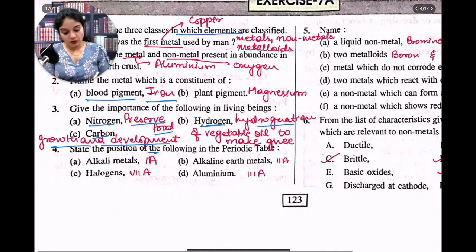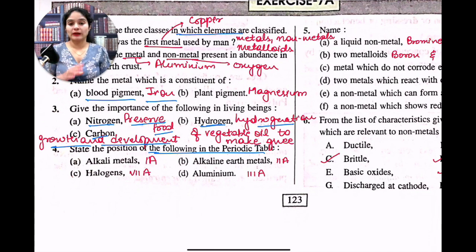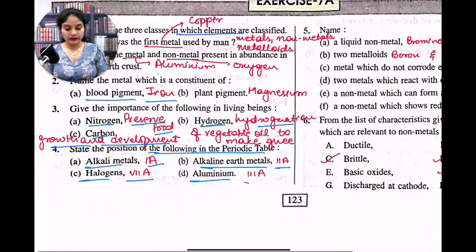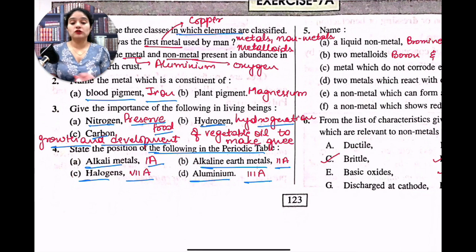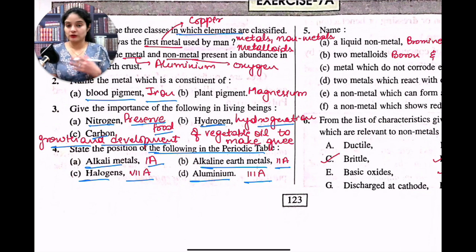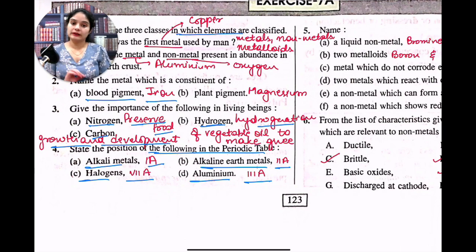State the positions of the following in the periodic table. So you need to know the group numbers. Alkali metals are in group 1A. Alkaline earth metals are in group 2A. Halogens are in group 7A. Aluminium is in group 3A. These details I have already explained with the help of a periodic table. If this part is unclear, definitely check that video.